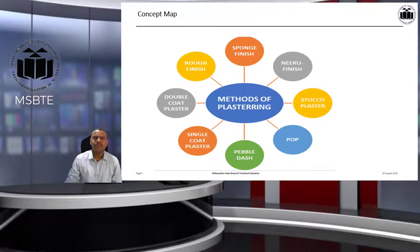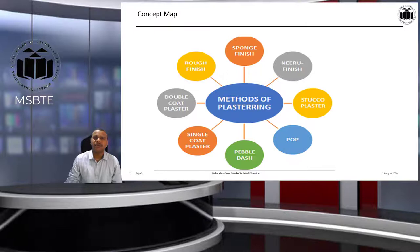This is a concept map of methods of plastering. Here you can see the different types of plastering methods such as stucco plaster, POP, table dash, single coat plaster, double coat plaster, rough finish, sponge finish, and Neeru finish. These are the different methods of plastering that we will study here.